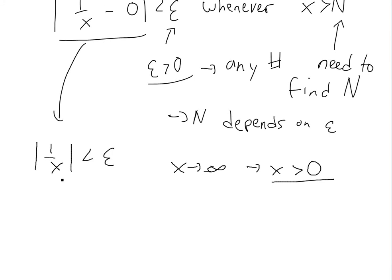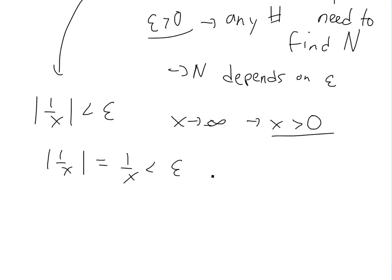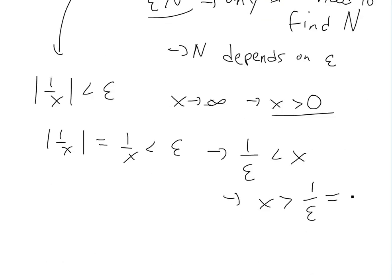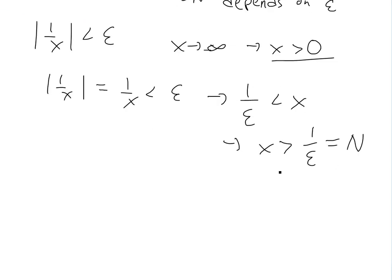So 1 over x is less than epsilon. Rearranging for x gives us 1 over epsilon is less than or equal to x, or equivalently x is greater than 1 over epsilon. This is exactly the required form, so our N value is 1 over epsilon. This is our proof. If epsilon is really small, N gets really large, because 1 divided by a small number is a large number.